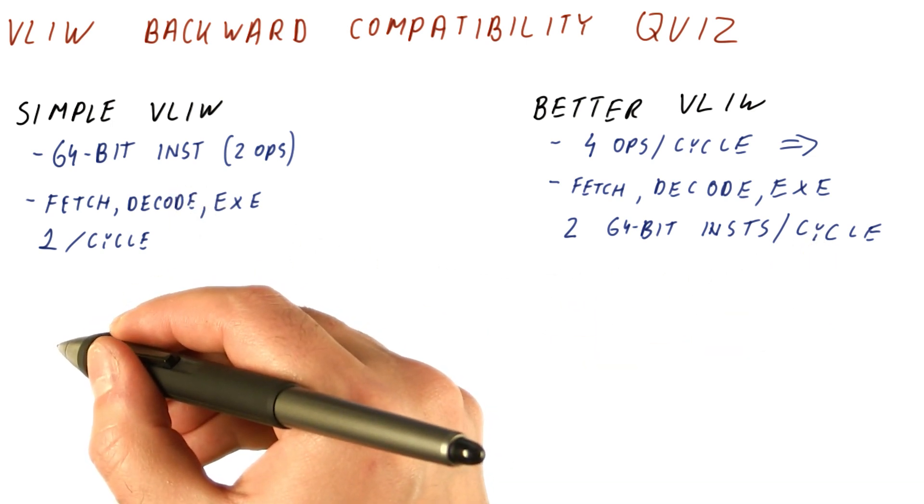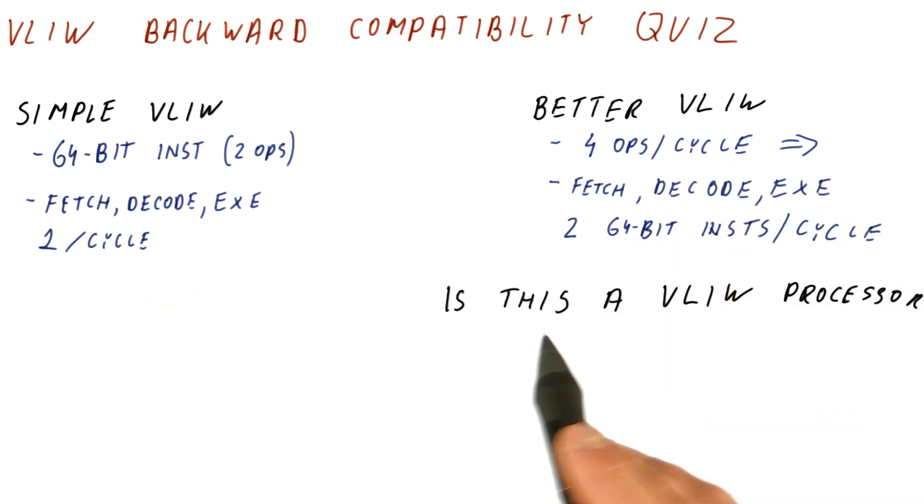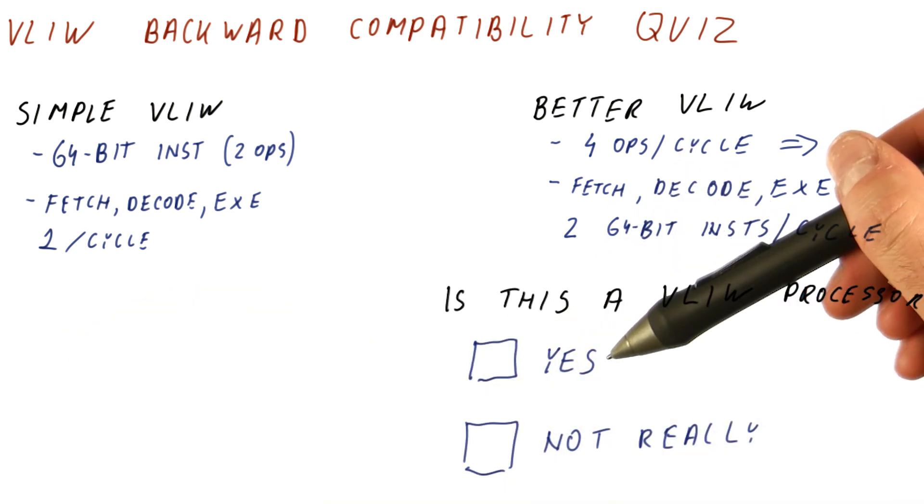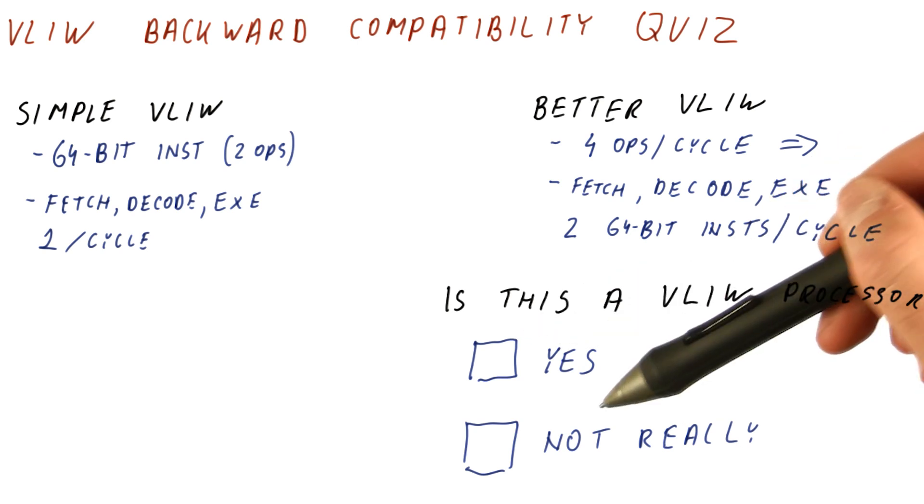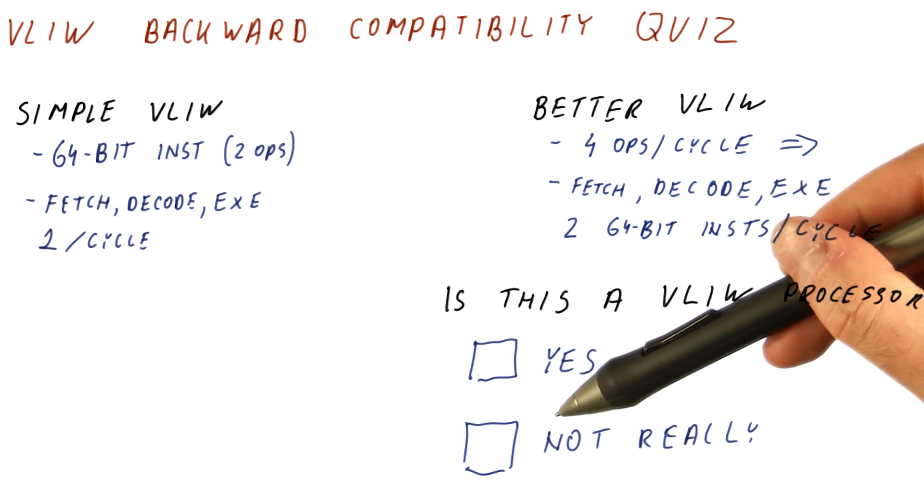The question for you is: is this new processor a VLIW processor? The possible answers are yes it is, or no it's not really a VLIW processor.